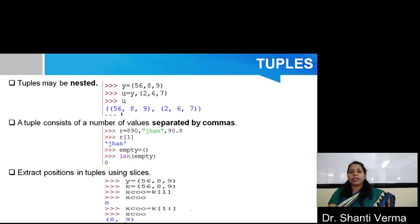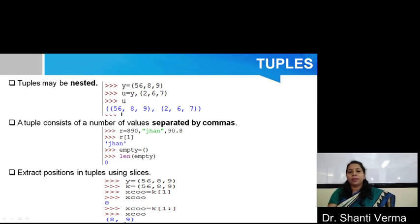You can also nest the tuples. For nesting a tuple, you basically create a tuple within a tuple. For that, you can write y as one tuple and make y within the u tuple as seen in the example. Basically, a tuple consists of a number of values separated by commas. You can also create an empty tuple. And for finding the length of the tuple, you can use the length function. To extract positions in the tuple, you can also use slicing, which we can also discuss for strings.